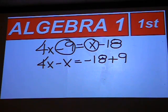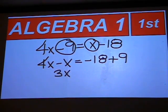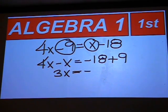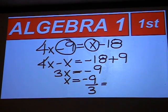Then you'll have 4x minus x, which is 3x, and negative 18 plus 9 is negative 9. Divide negative 9 by 3 and you will come up with an answer of negative 3.